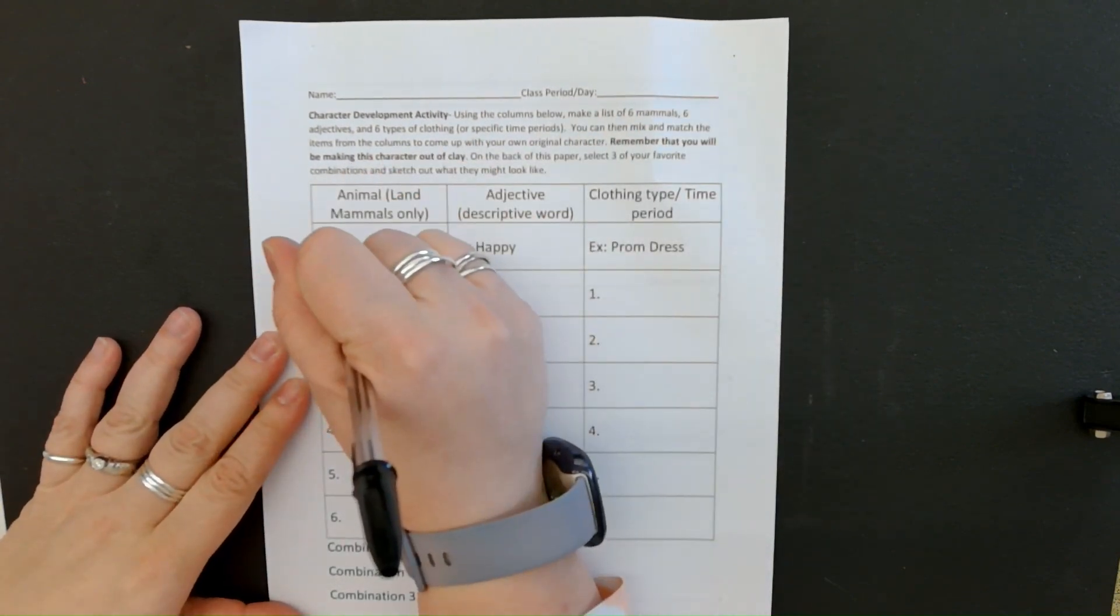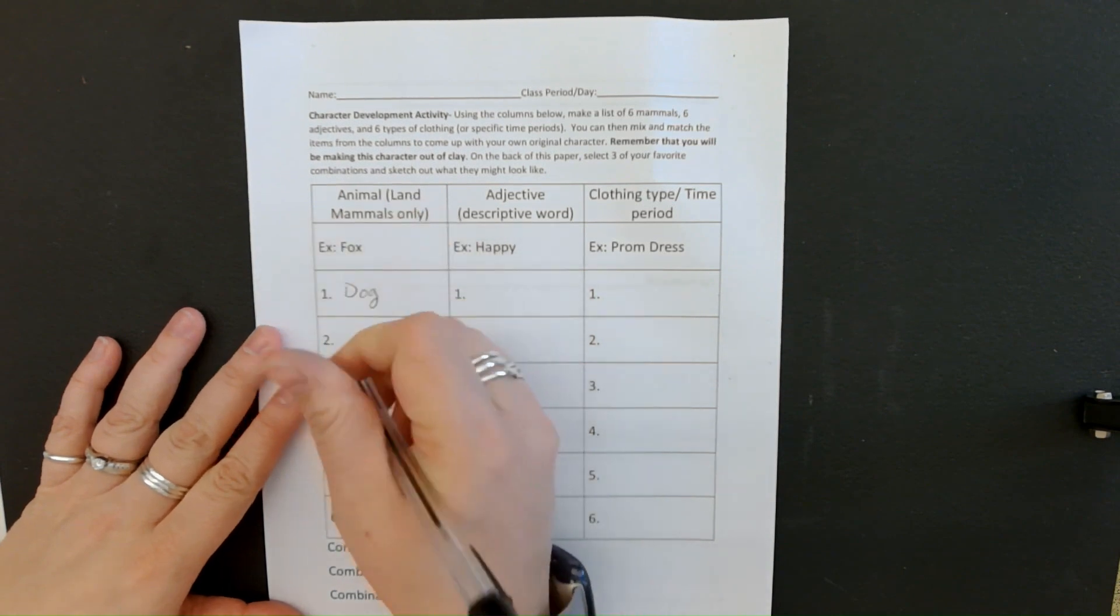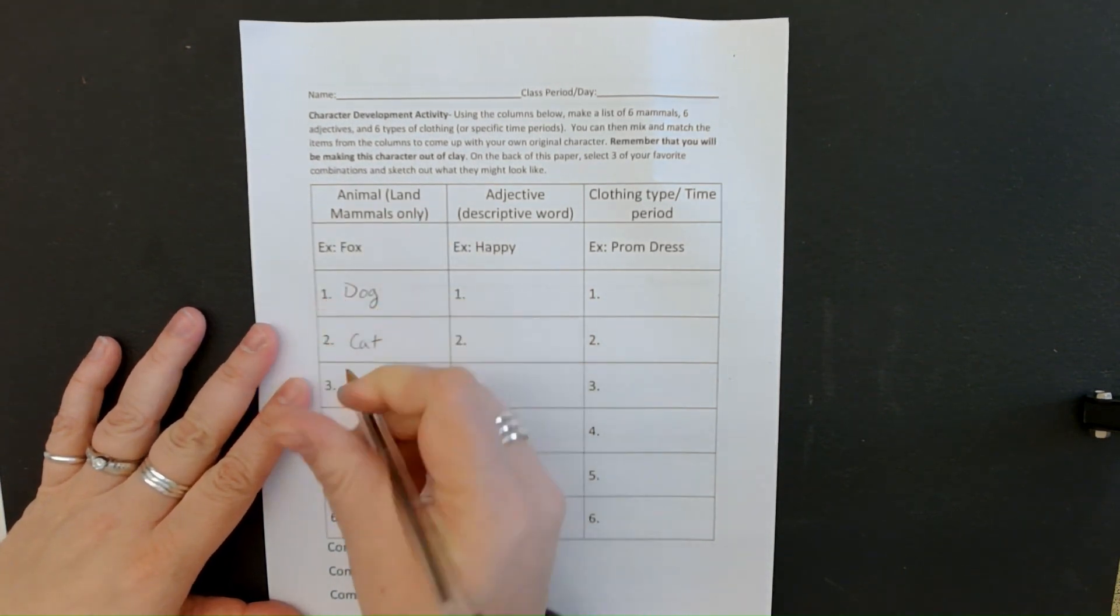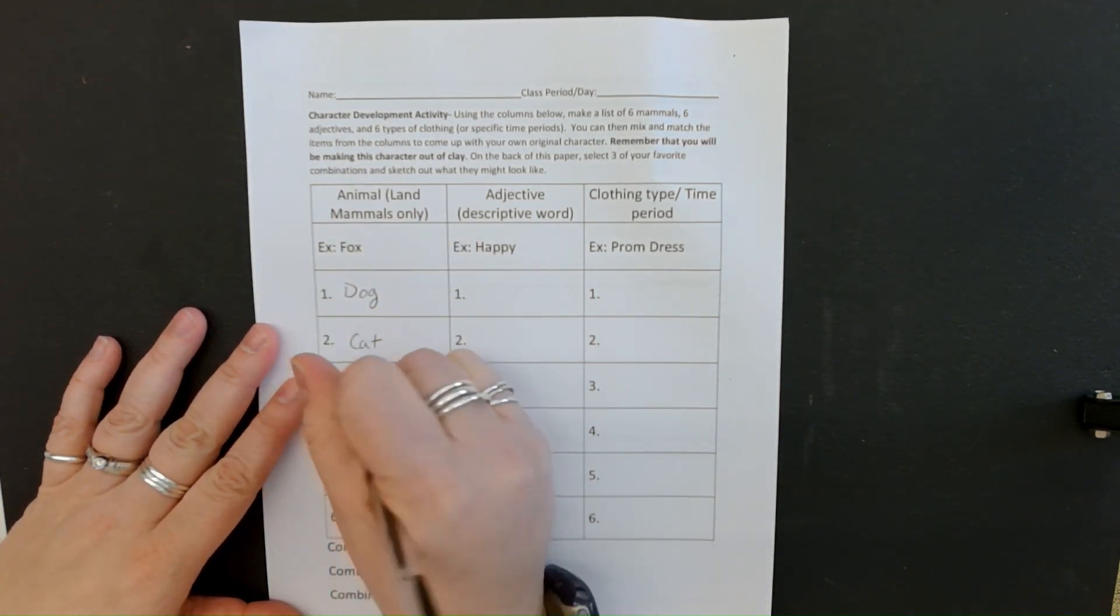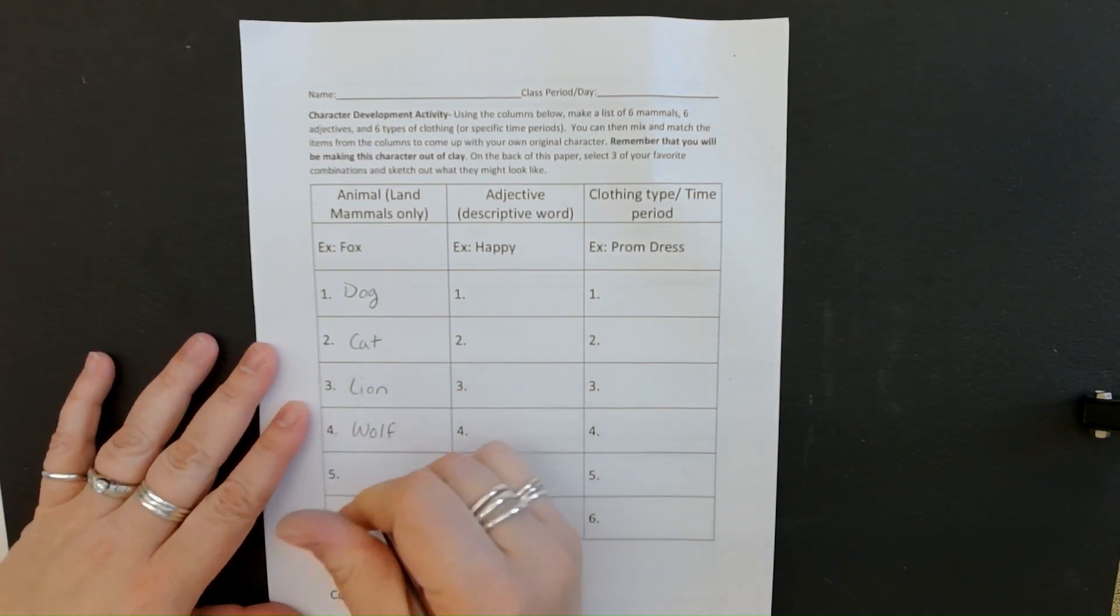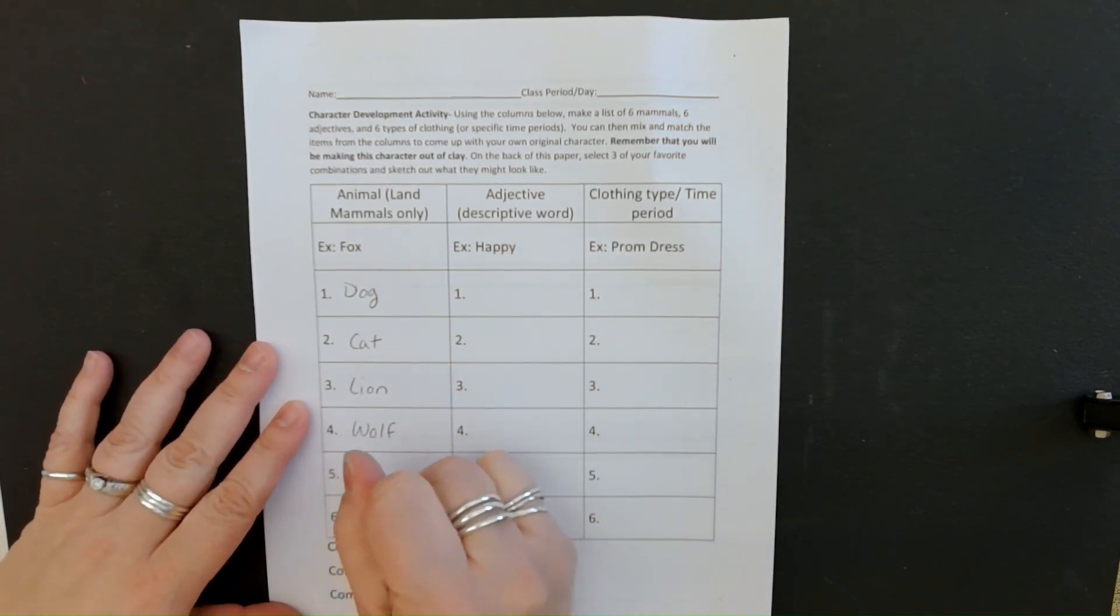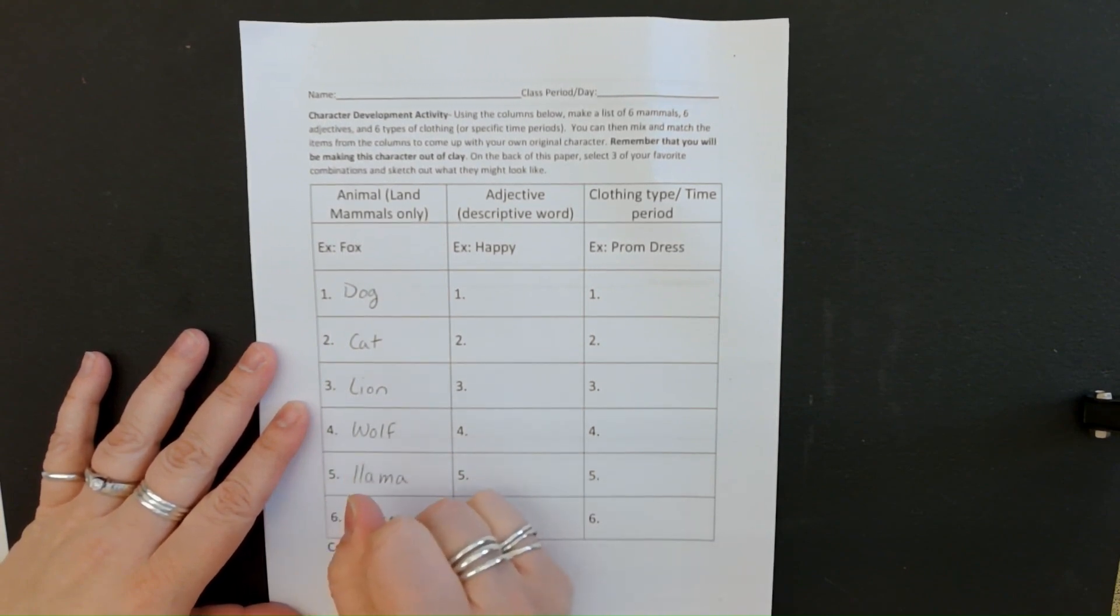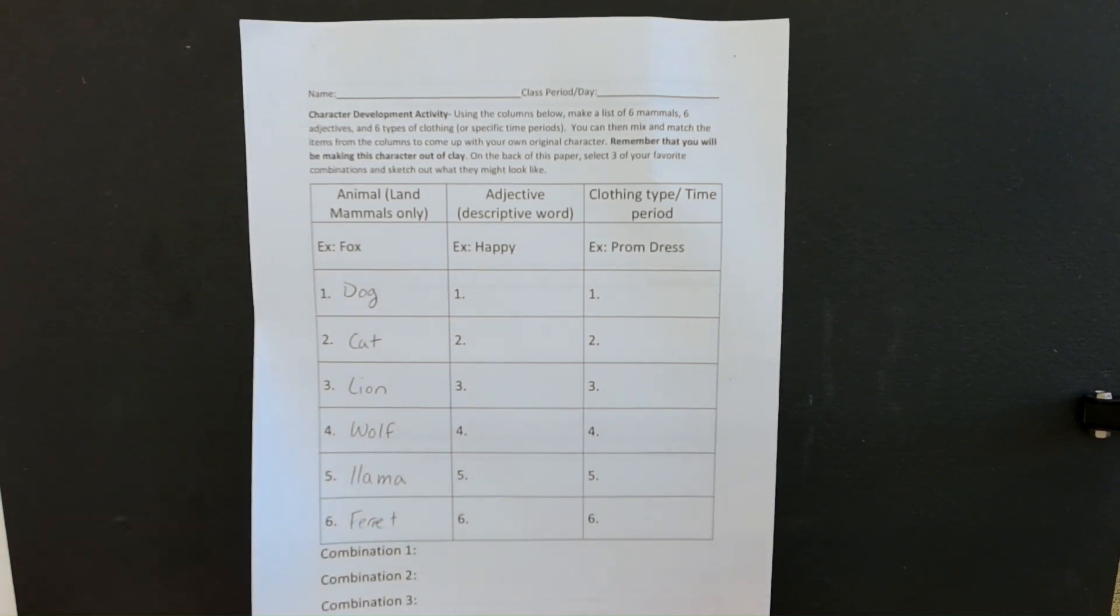So I'm going to fill up my animals. I'm going to say dog. I'm going to do a cat, a lion, do a wolf, a llama, and a ferret. So that's my list of mammals.